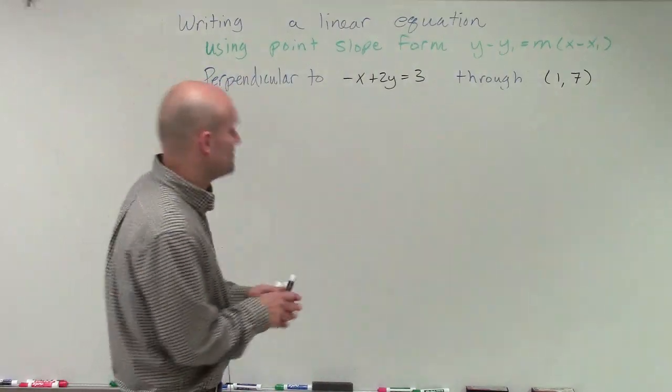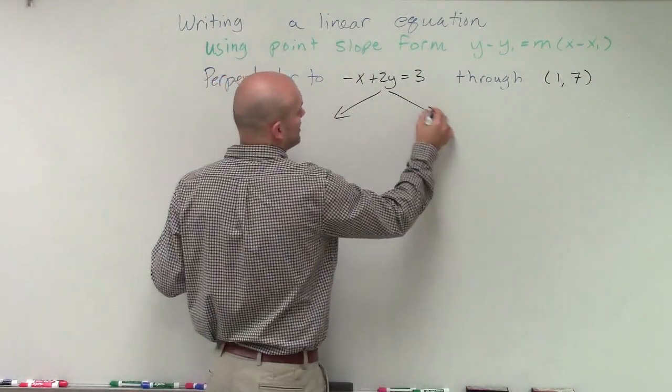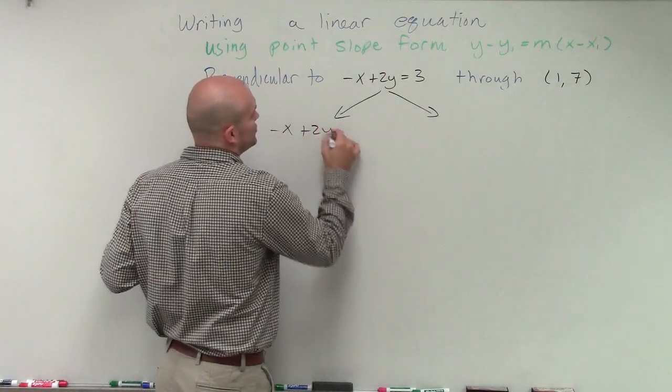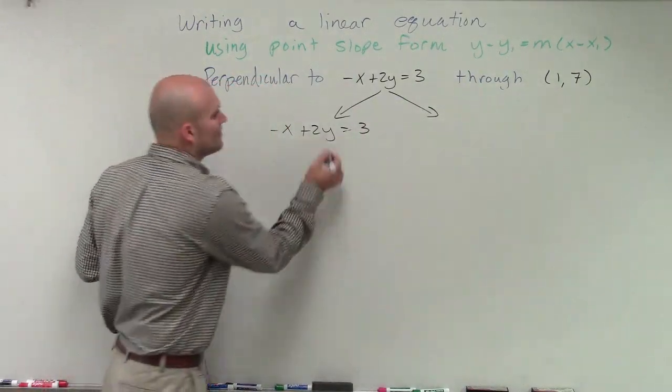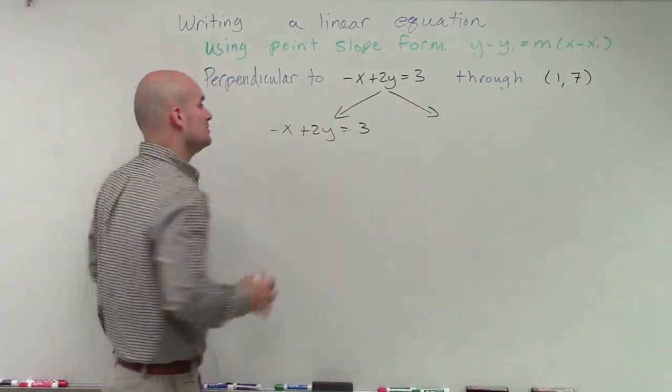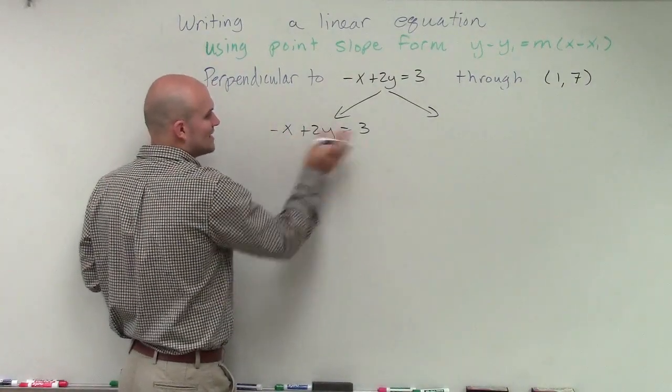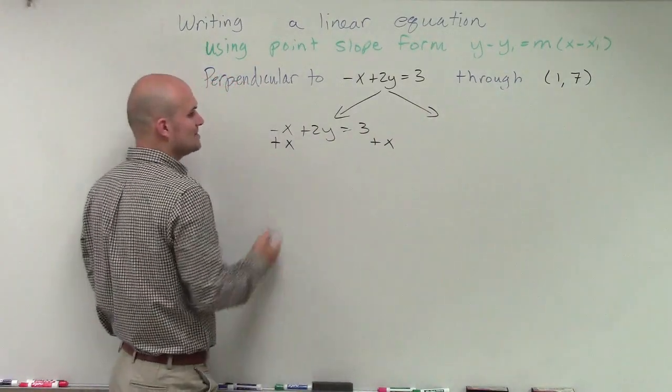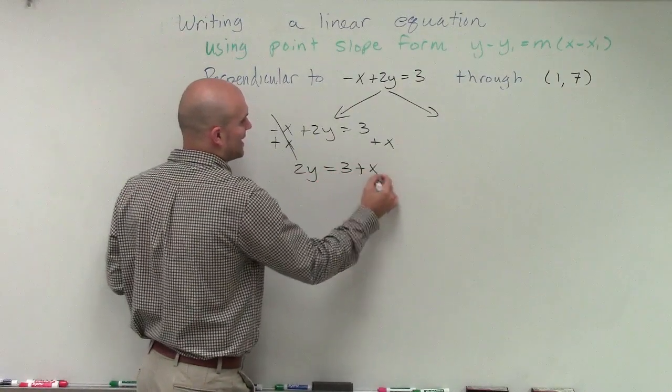When dealing with this problem, there's a couple different ways we can determine what the slope is. The most basic way is to convert it to slope-intercept form. So you could have -x + 2y = 3. Then to convert to slope-intercept form, I need to isolate my y variable. To do that, I'll get the x and the 2 onto the other side. To get this x over there, I'll add x to both sides. I'm left with 2y = 3 + x.